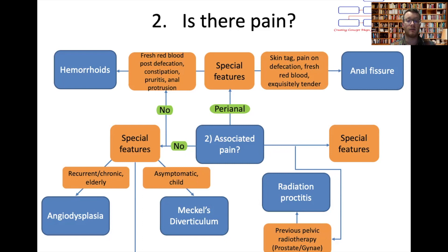Haemorrhoids generally present with bleeding after defecation, the patient might feel a slight lump, and there'll be pruritus — itching or irritation of the region. If there's no pain at all, the patient might have radiation proctitis. As mentioned before, patients with pelvic malignancies — rectal, prostate, or gynaecological — who've had radiotherapy to their pelvis can develop radiation proctitis.